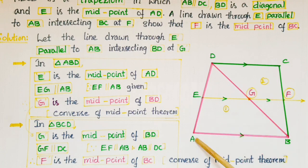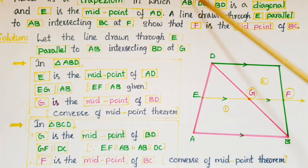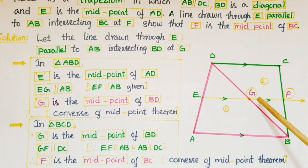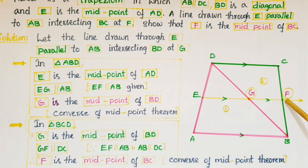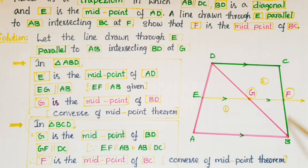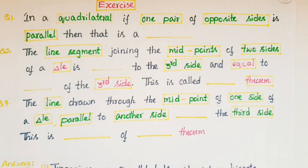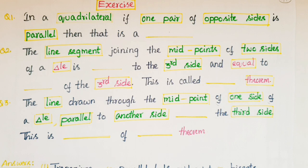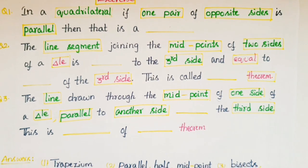GF is parallel to DC because EF is parallel to AB and AB is parallel to DC, as given in the problem. So as per the converse of the midpoint theorem, F is the midpoint of the third side, which here is BC. Therefore, F is the midpoint of BC.